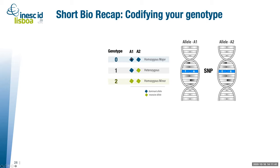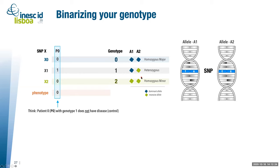For any combination of SNPs, we can define a genotype. From here on, we just talk numbers. A genotype is zero if both alleles are dominant, one if one is dominant and the other recessive, and two if both are recessive. This means we can represent a genotype with three simple values: 0, 1, and 2.